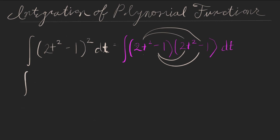So we would get 2t squared times 2t squared is going to equal 4, let me add some parentheses here. So we'd have 4t to the fourth. 2t squared times the negative 1 is negative 2t squared. And then again, another negative 2t squared for these two. And then we'd have positive 1.